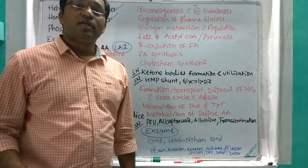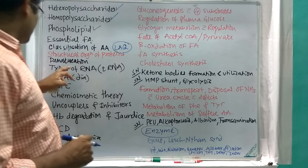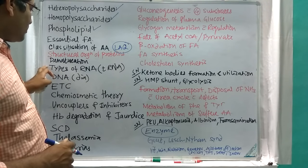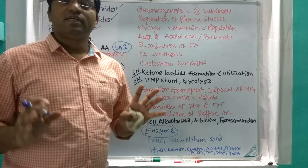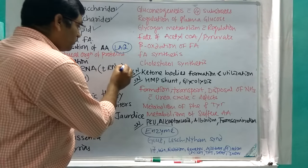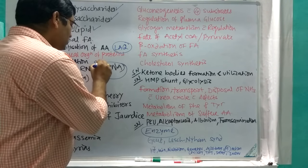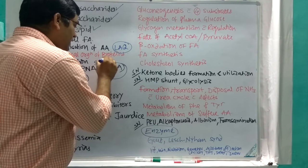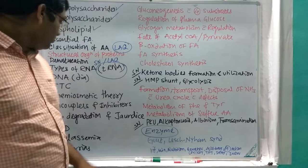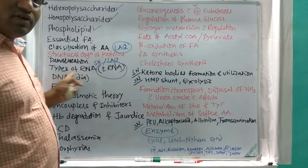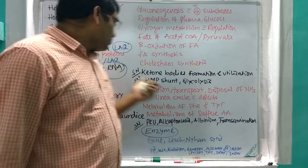Types of RNA: of the three types, the most important is tRNA along with its diagram. This is an important short note as well as a long answer question. For DNA, read about the Watson and Crick model of DNA along with the diagram — this is an important short note.